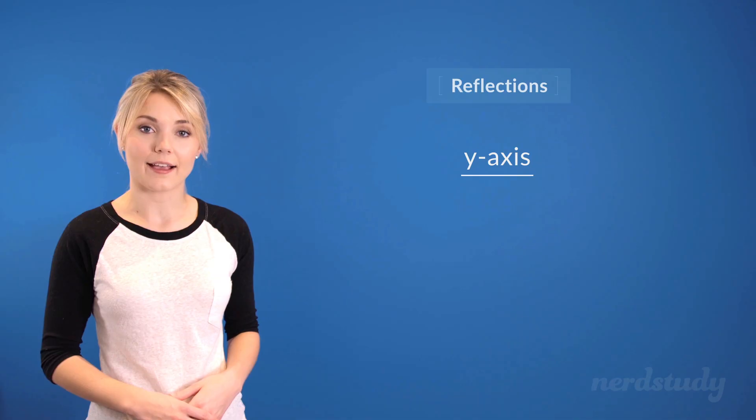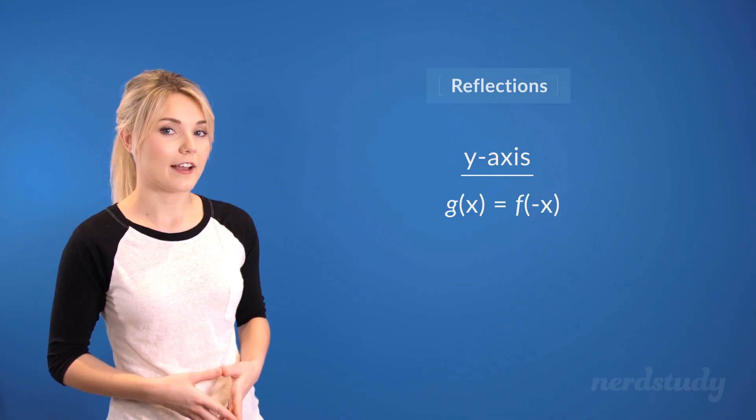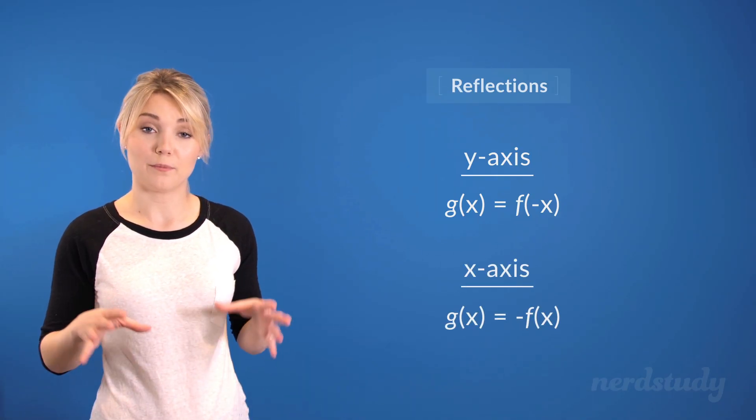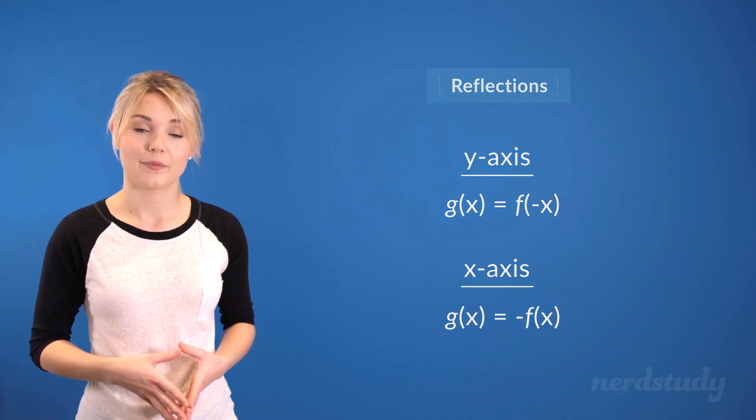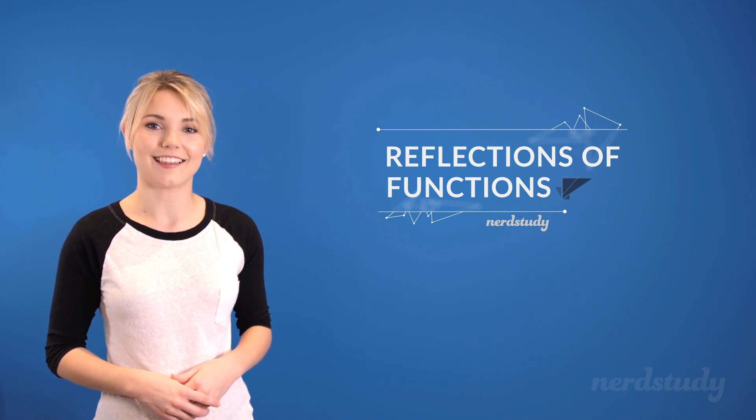Just remember that a reflection along the y-axis involves the x on the inside to be multiplied by a negative, while a reflection along the x-axis involves the whole function to be multiplied by a negative. Well, that's it for this video. Make sure to practice lots of questions, and we hope to see you in the next lesson.